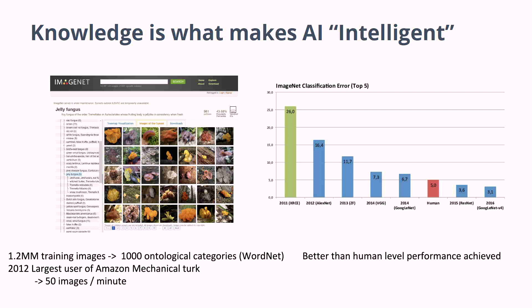I wanted to establish an obvious but important premise: knowledge is what makes artificial intelligence intelligent. It's not neural networks or deep learning or GPUs, and certainly not TensorFlow.